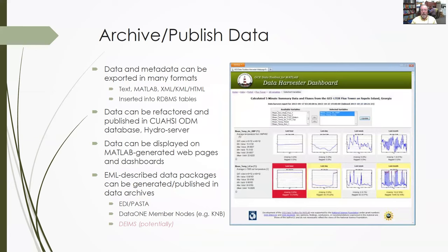When the data are worked up and you're ready to archive or publish them, there are native tools to generate a wide variety of output files. You can export data and metadata in various text and MATLAB formats, as well as generic XML, KML, and HTML files for various web scenarios. Or you can insert values directly into a relational database, and the data can be refactored and published as a quasi-observations data model. The data can also be displayed on MATLAB-generated static web pages and dashboards — the dashboard shown here is interactive with JavaScript, displaying variables at different time intervals with automatic coloring based on how many flagged or missing values there are to highlight problems with sensors.